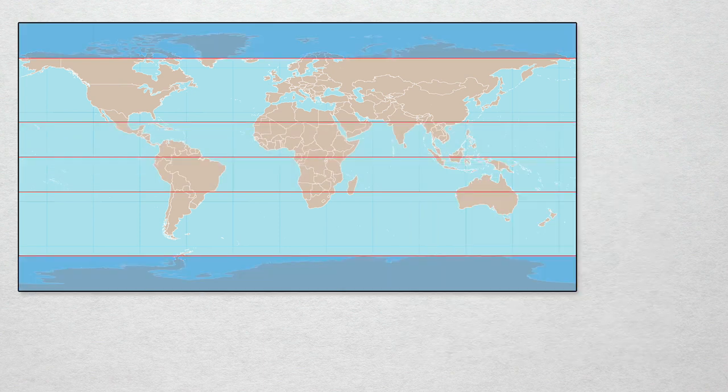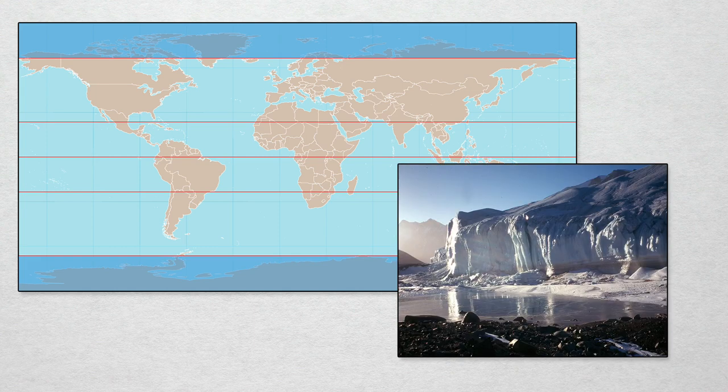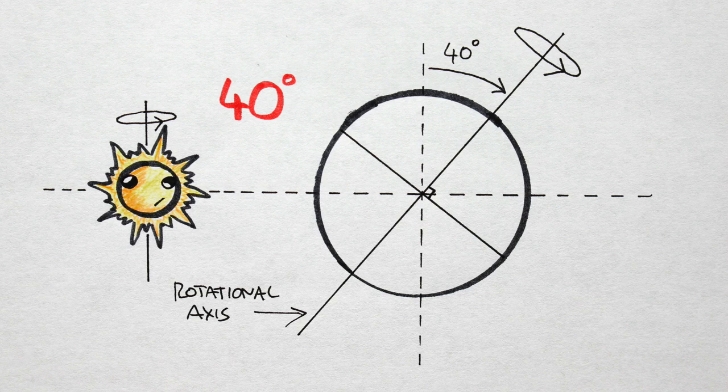Inside the polar circles there will be at least one day per year of total darkness and one of total light. This is a planet's frigid zone. Expect tundra, ice caps, etc. Where these lines of latitudes are located depends on a planet's axial tilt.